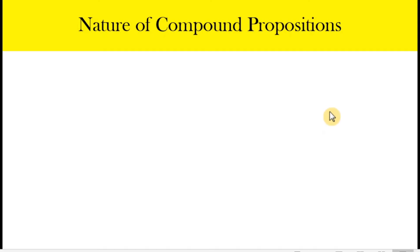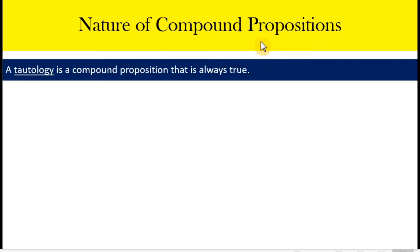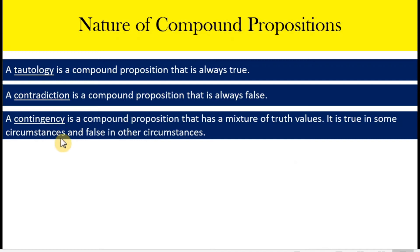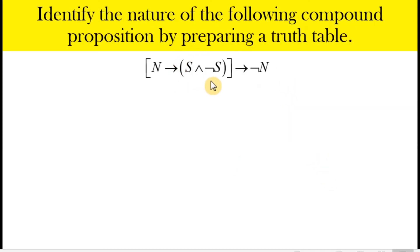One application of truth values and truth tables is to identify the nature of a compound proposition. When we say nature, we are referring to whether a compound proposition is a tautology — it is a tautology if the compound proposition is always true — it is a contradiction if it's always false, and it is a contingency if the truth values are a mixture of true and false.